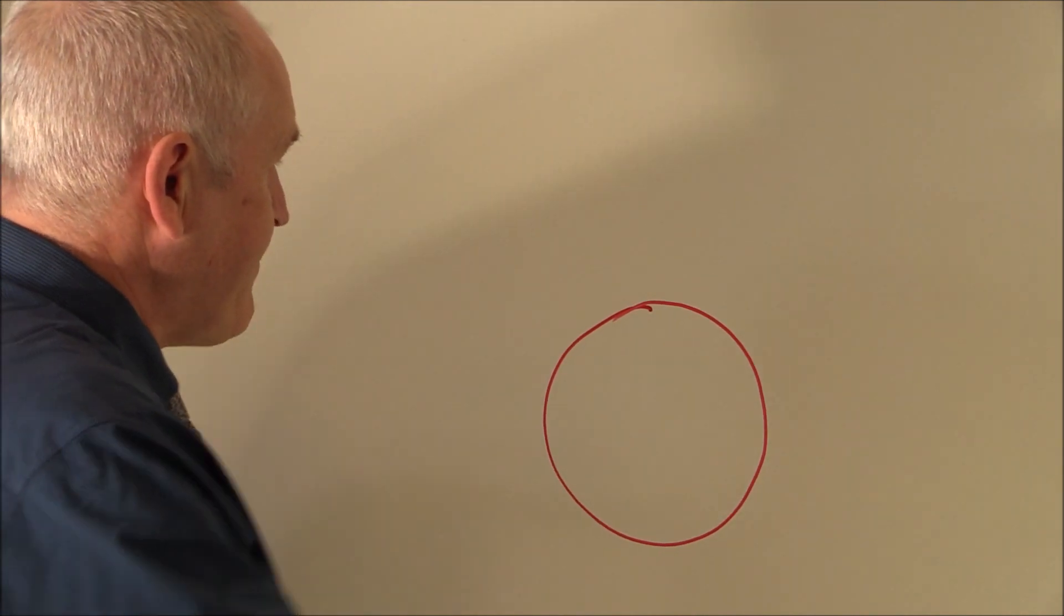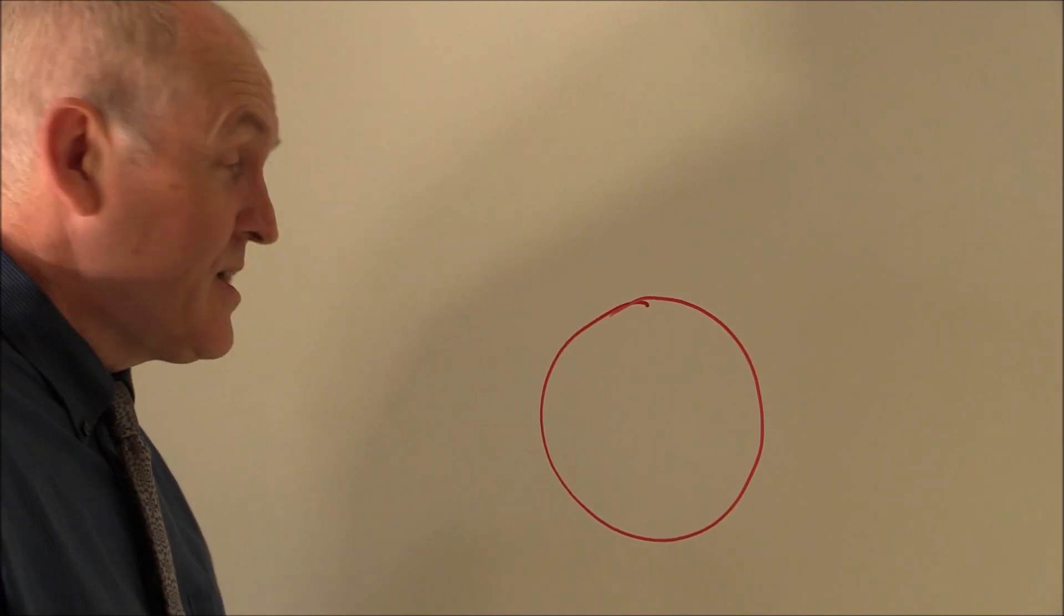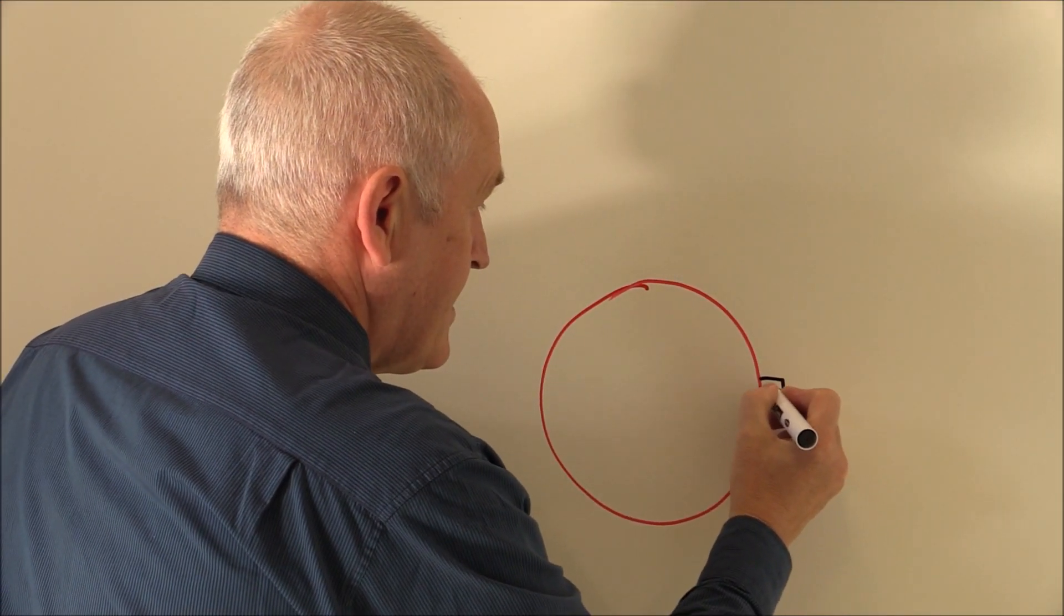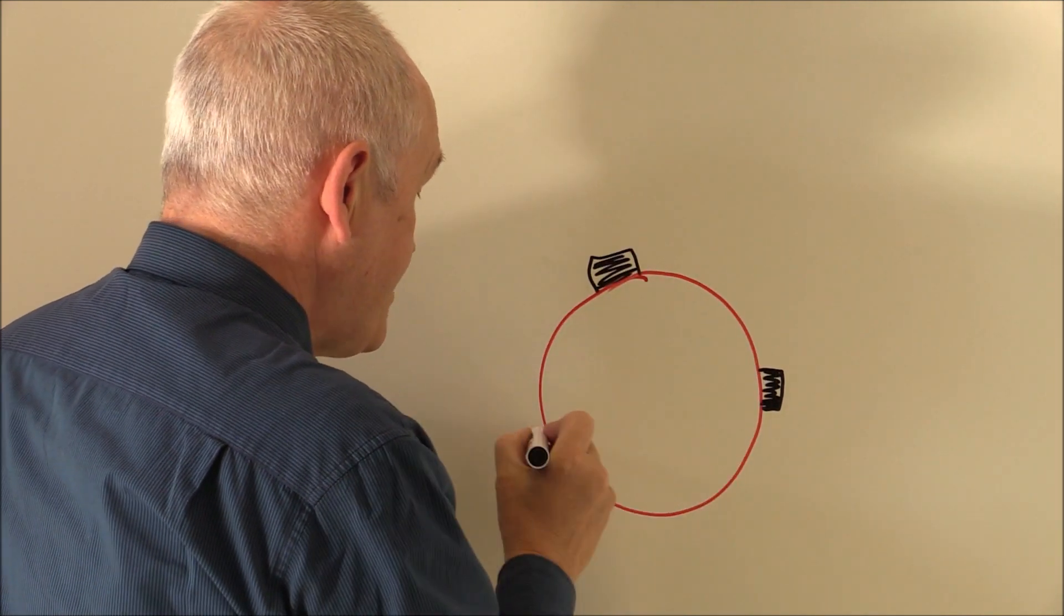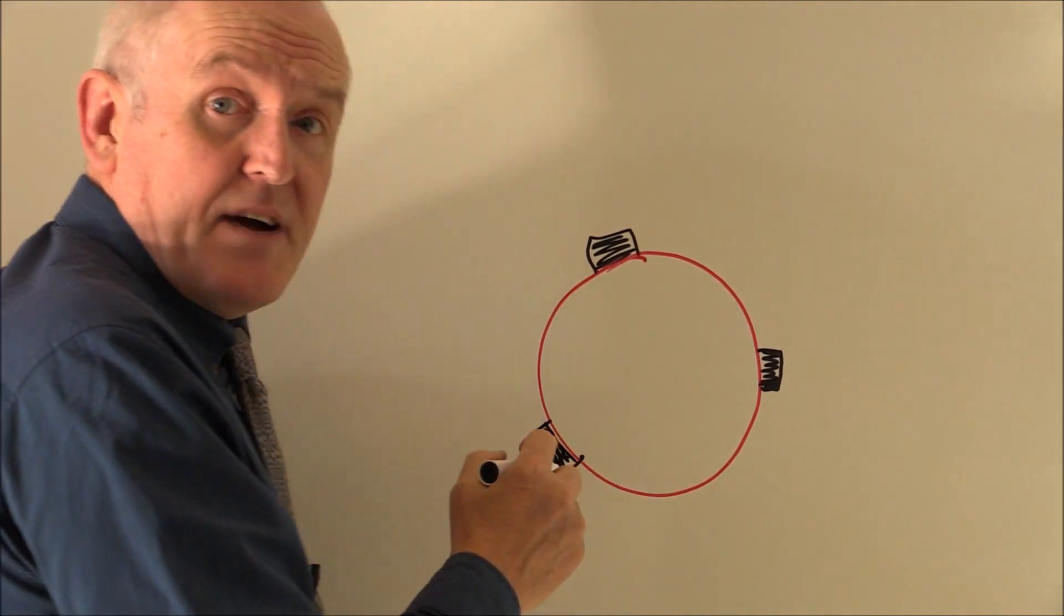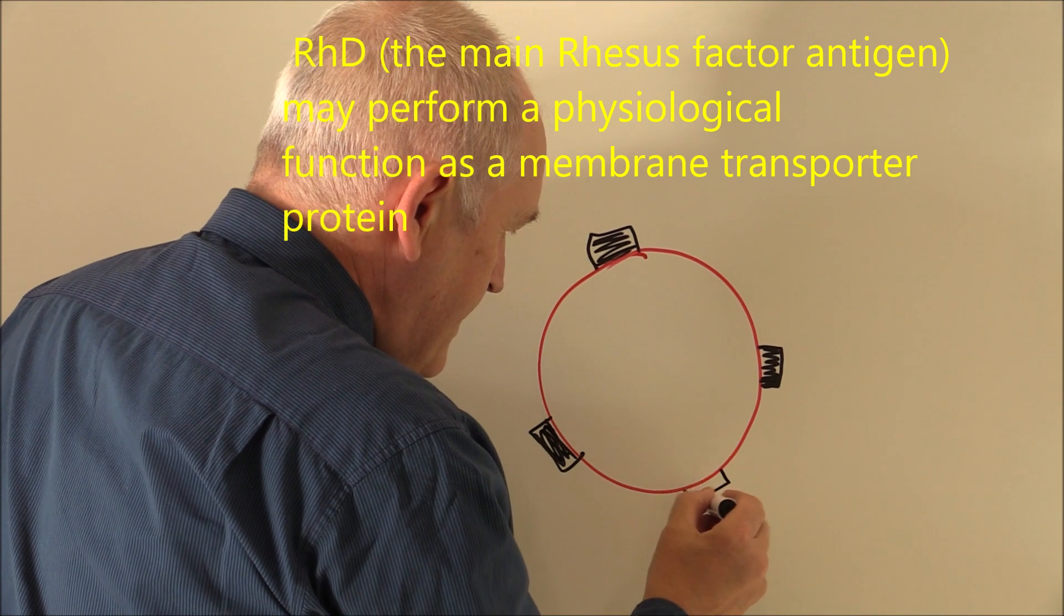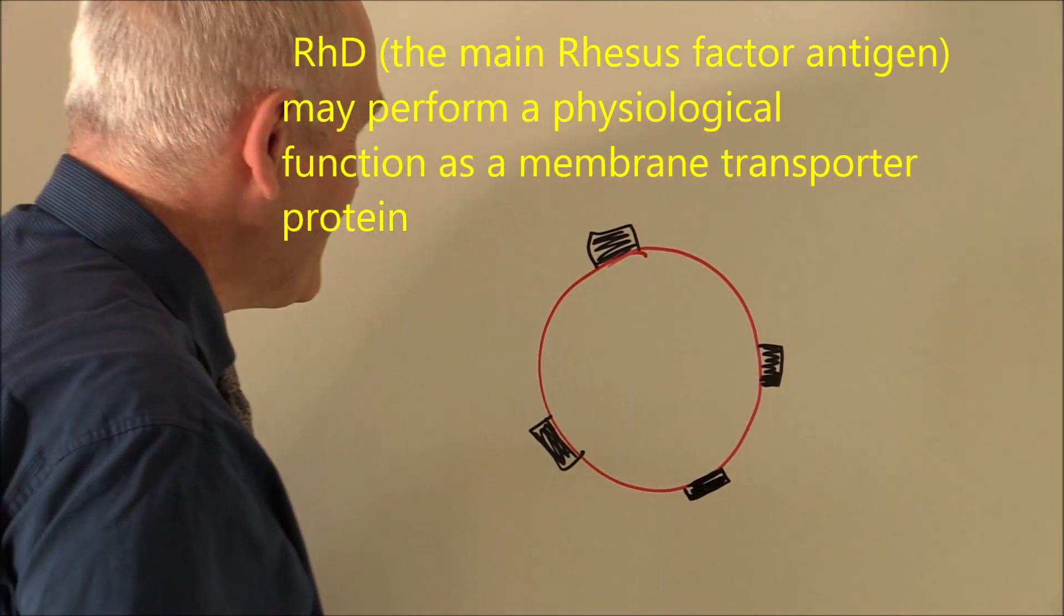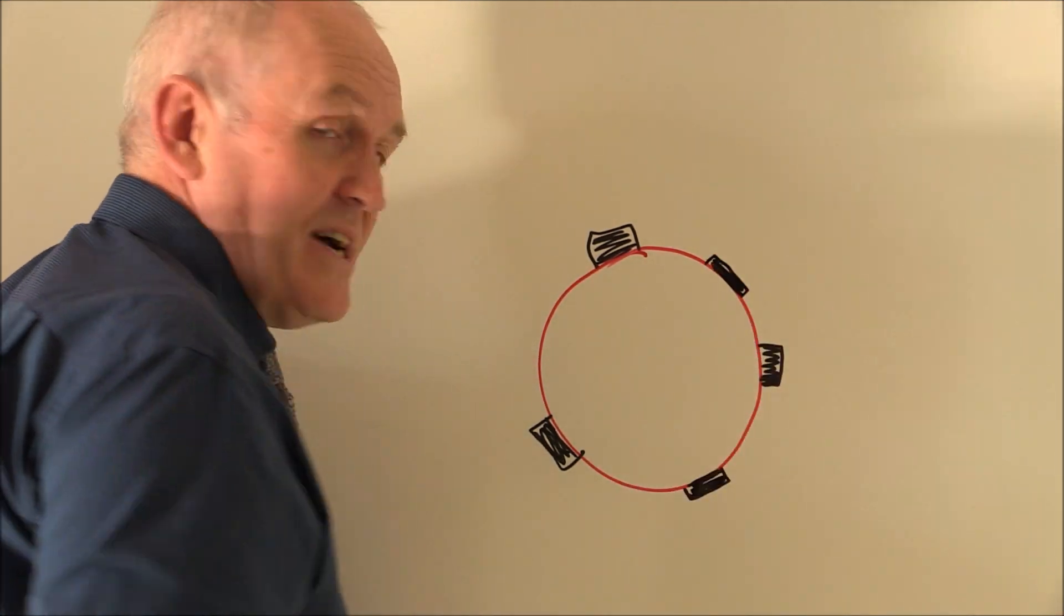The Rhesus factor is an additional factor, and it's either present or absent on the red cells. So here we have a diagrammatic representation of the Rhesus factor antigen. It's a protein, and in fact it may be a membrane transport protein. There's currently debate about what the Rhesus factor actually does in biochemical terms. But it's either present or absent.